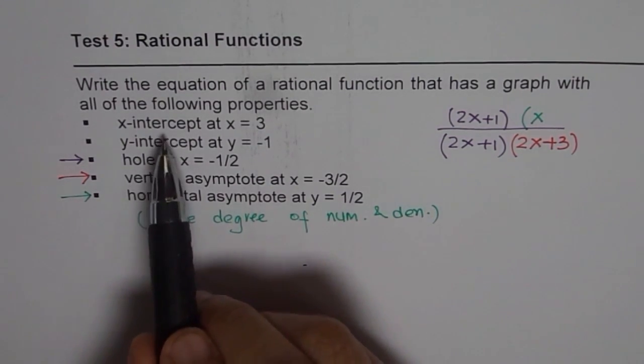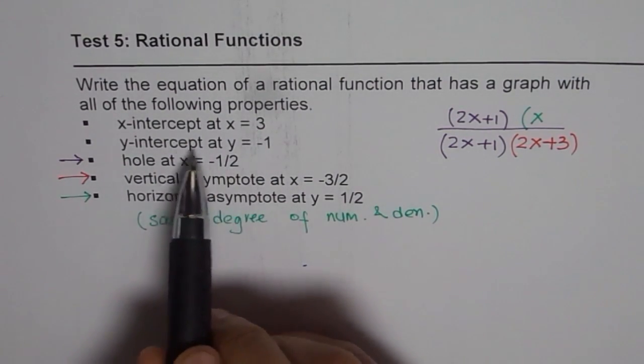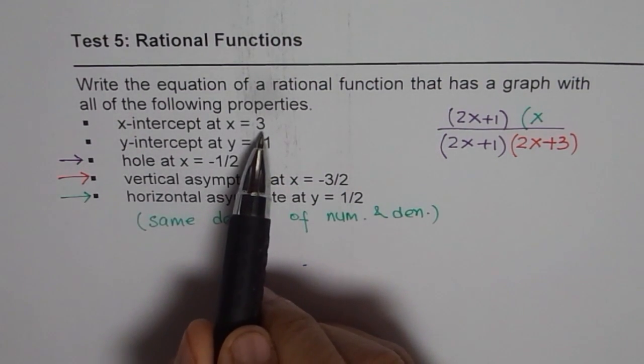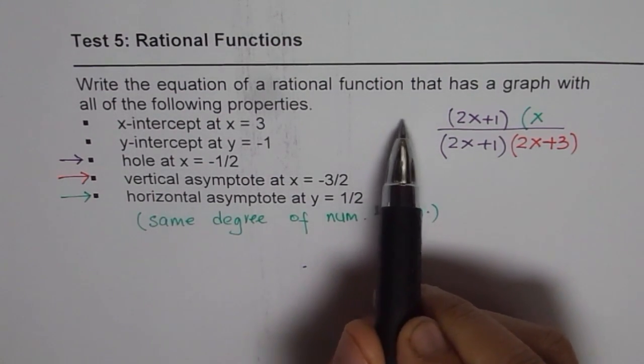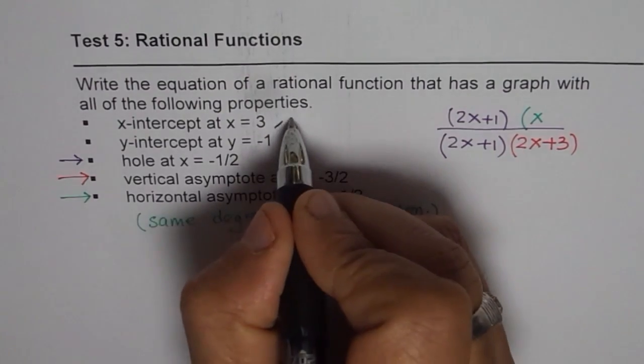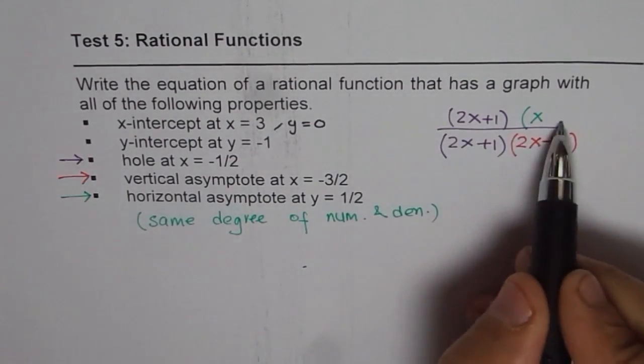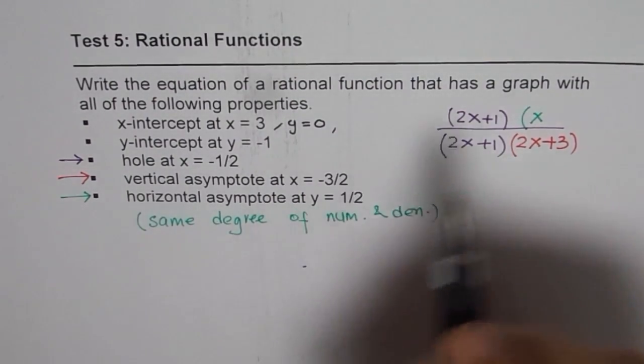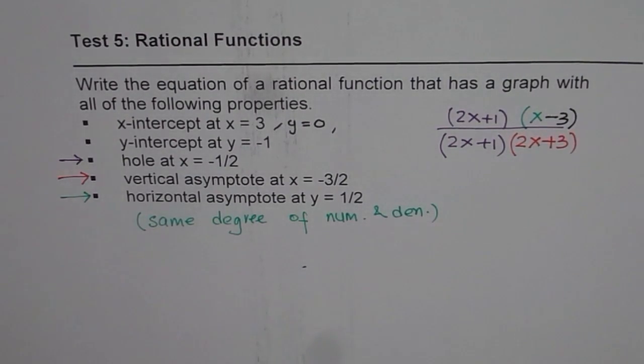Now, let us look into the X-intercept or Y-intercept for that matter. So, when we say X-intercept is 3, it means what? It means that if Y is 0, for X-intercept, it means Y equals to 0. So, Y equals to 0 means numerator is 0 for X equals to 3. So, that is possible if I have a factor which is X minus 3.